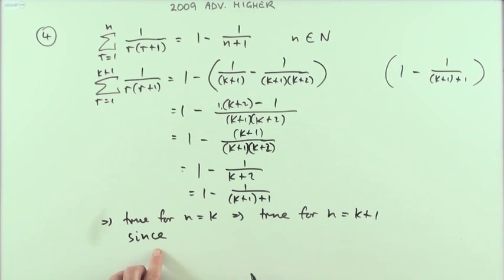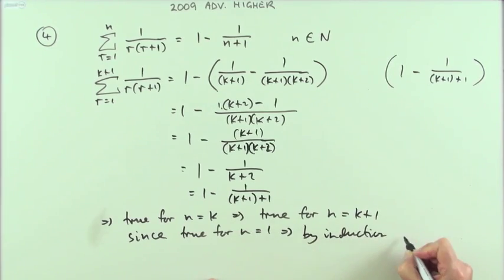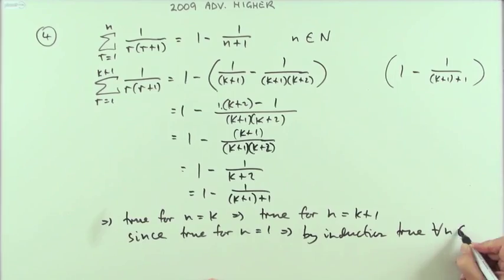Then, since it was true at the beginning, since it was true for n equals one, that means by that stepping stone, that inner working, that induction, if it's true for one step it's true for the next. If it's true for one, it's true for two. If it's true for three, it's true for four, and so on forever. That means by induction, it's true for all n which are positive integers, or I'm just deciding to call the natural numbers.